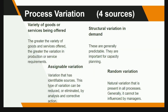Process variation: variability in processes costs money. There are four sources of variation. First, variety of goods or services being offered — the greater the variety, the greater the variation in production or service requirements. Second, structural variation in demand, which is generally predictable and important for capacity planning. Third, assignable variation, which has identifiable sources and can be reduced or eliminated by analysis and corrective action. Fourth, random variation, which is natural variation present in all processes and generally cannot be influenced by managers.